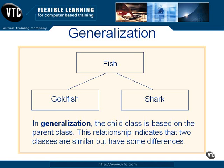However, even though the goldfish and the shark are both kinds of fish, they differ enough from each other in terms of size, shape, and ways of eating that each one is its own class. You should use a generalization relationship to indicate that two classes — goldfish and shark — are similar in that they're both fish, but they have some differences from each other.